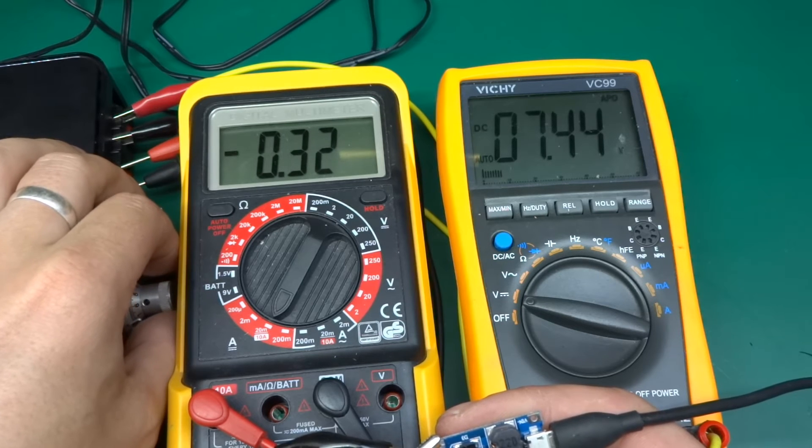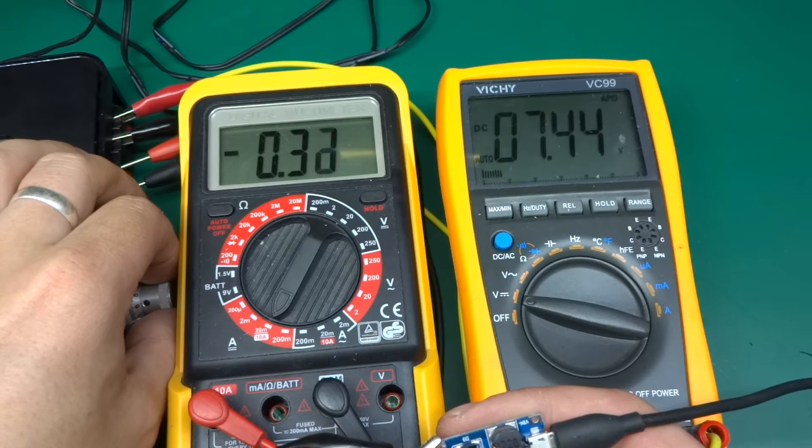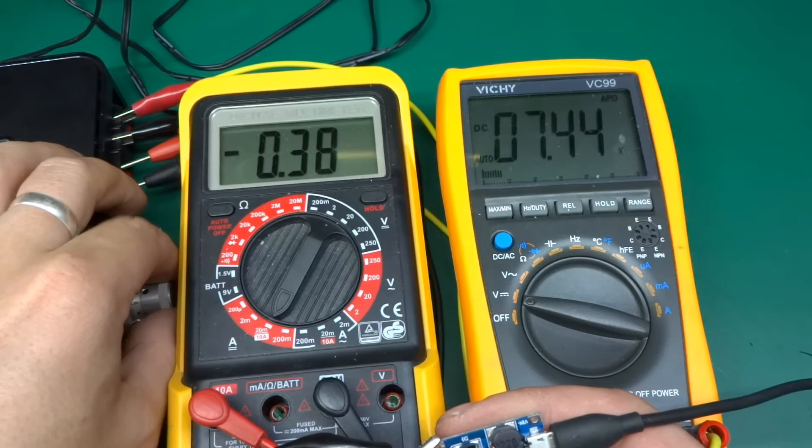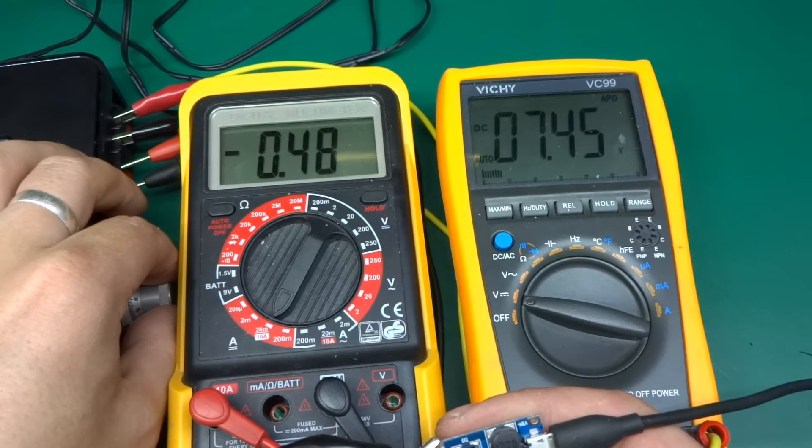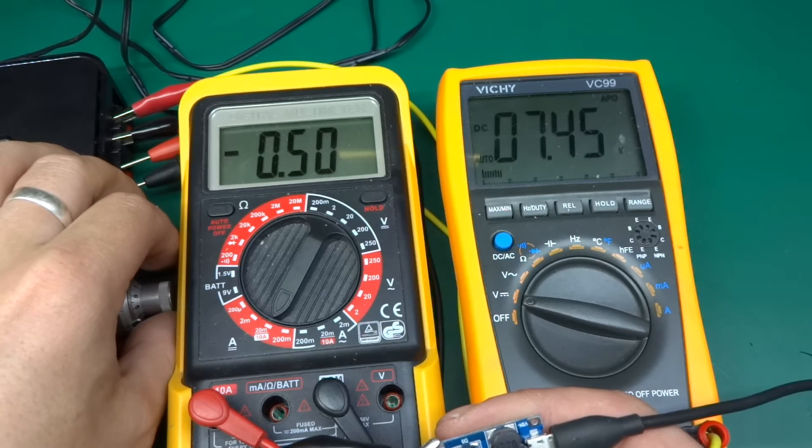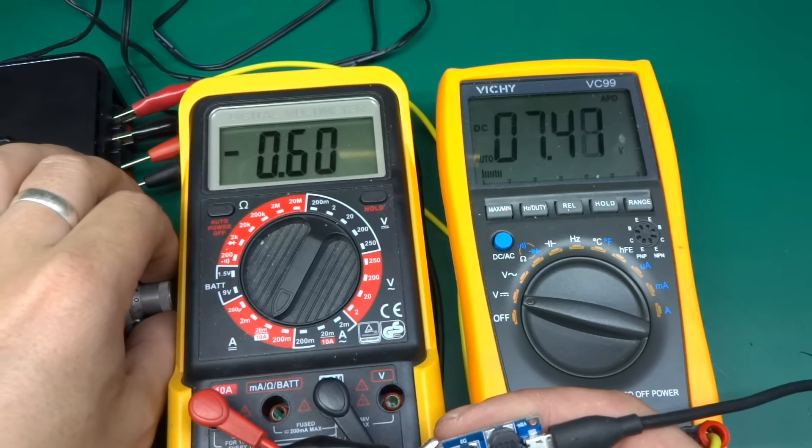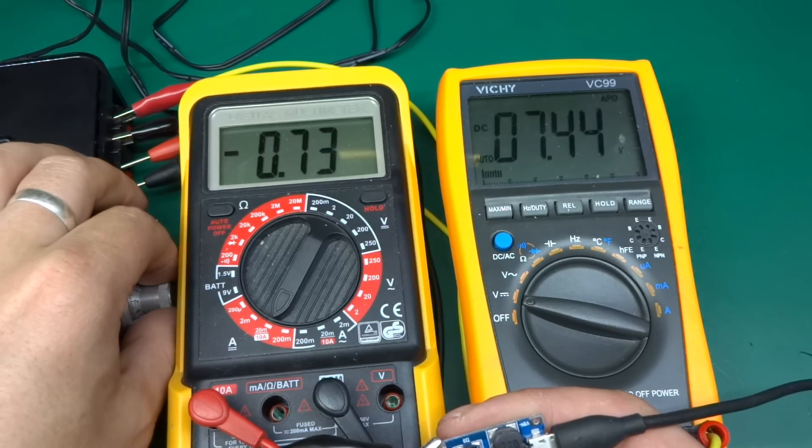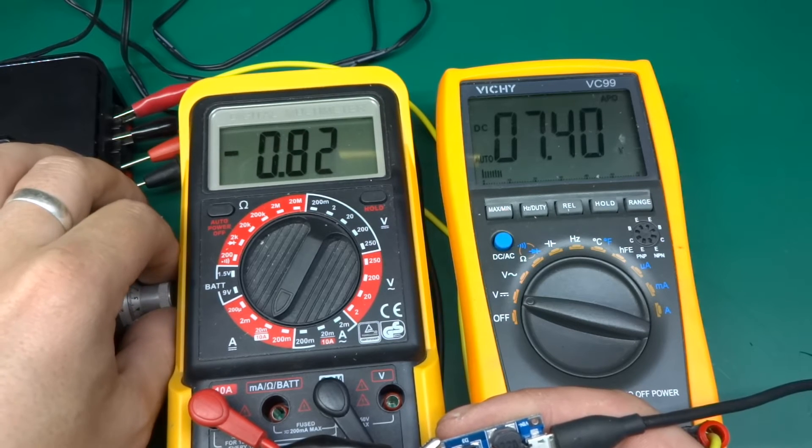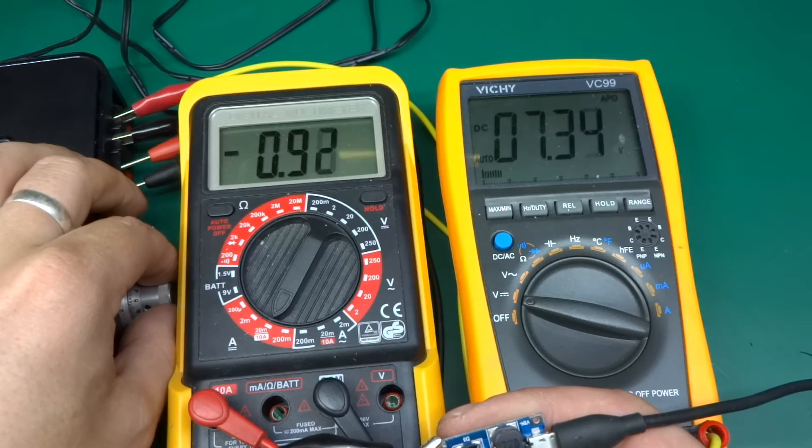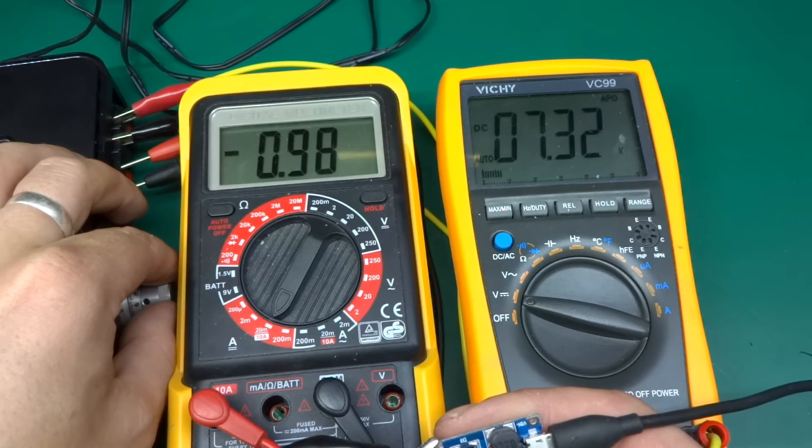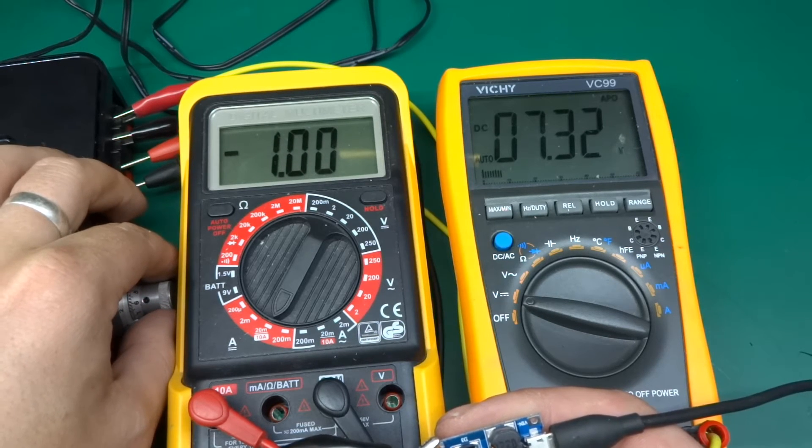Okay, 7.49. Let's start increasing the load. We've got 100 milliamps and the voltage dropped a little bit. 200 milliamps and it's holding 7.44. 300 milliamps, still there. 400, 500. It keeps kind of holding.